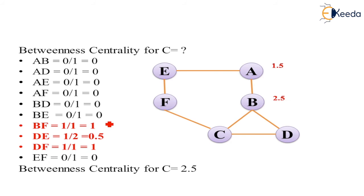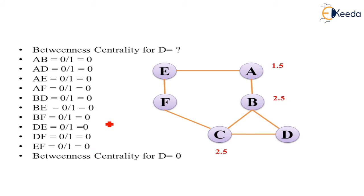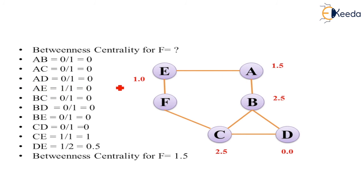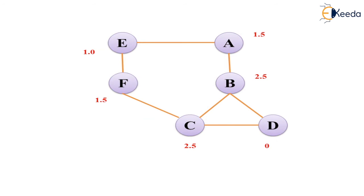Similarly, we can find out the betweenness centrality for C also, which comes down to 2.5. As D is a side node at any point, it is not going to come between any of the edges, so we take it as 0. For E, all the edges are 0, but only for A,F which is the shortest path and E is coming in between them, so we take it as 1. Now let's calculate it for F, only C,E and D,E which gives the value. This is how we calculated the betweenness value for all the nodes.